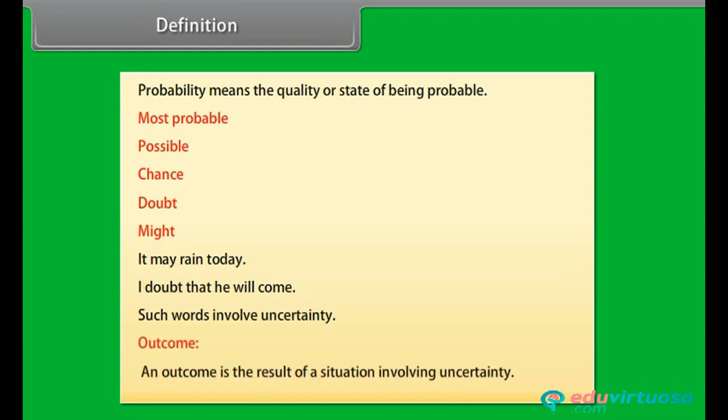Outcome. An outcome is the result of a situation involving uncertainty. Probability - An experimental approach.